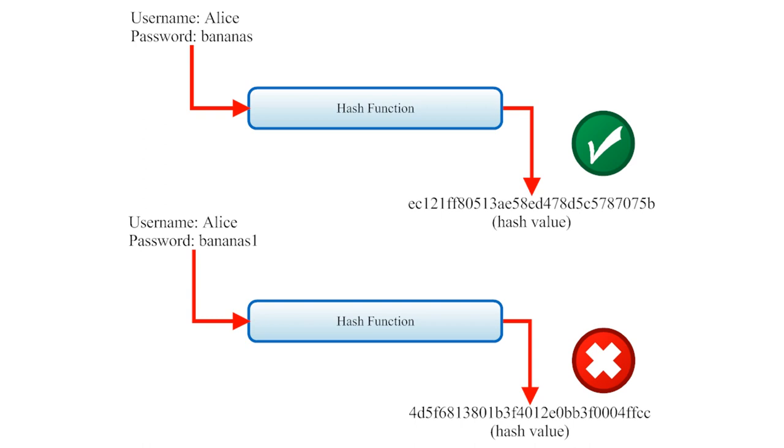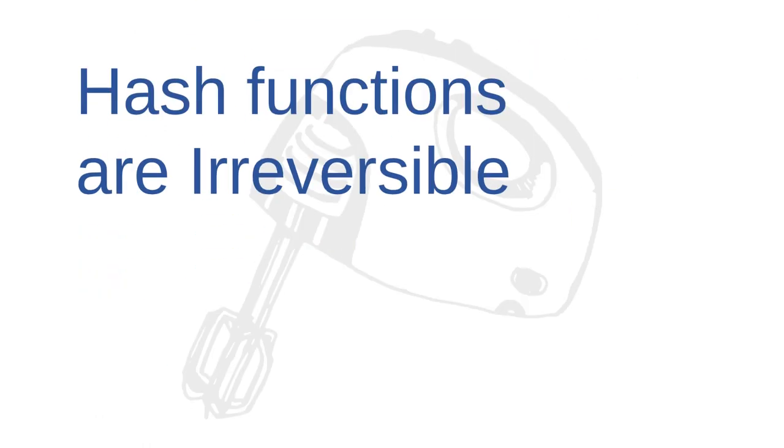Even if a hacker breaks into the password files at your bank and steals the hashed passwords, and even if they know the mathematical formula for the hash function, hash values are of little use to them because the hacker can't translate the hash values back into the passwords. The hash function only works one way. It can only scramble the passwords, not de-scramble them.